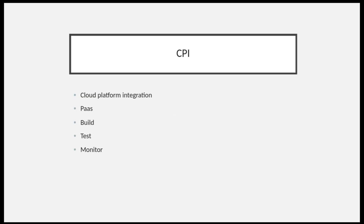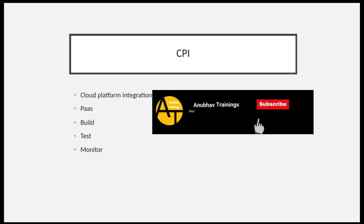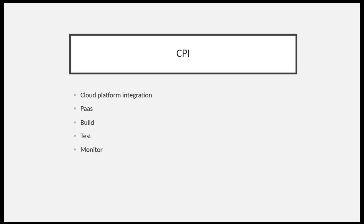CPQ is an application — a kind of application used by the business. We have already covered what capabilities CPQ can do and how it helps the business. But CPI will integrate applications or businesses — whether it's CPQ or any other ERP system.